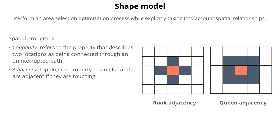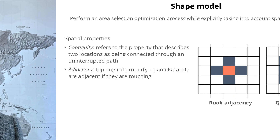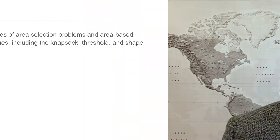And three, a dual optimization model, where either the knapsack or threshold model is combined with a set of spatial constraints, which is known as the shape model, such as minimizing the total perimeter of the final selection, or maximizing the contiguity, etc.